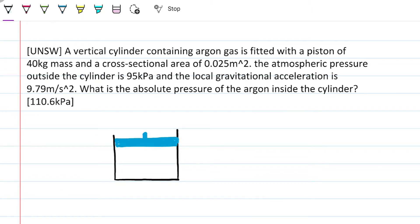Okay, so we have argon inside here. And we know the pressure outside, the pressure outside is 95 kilopascals. We also know the cross-sectional area of this fella here, the cross-sectional area is 0.025 meters squared.